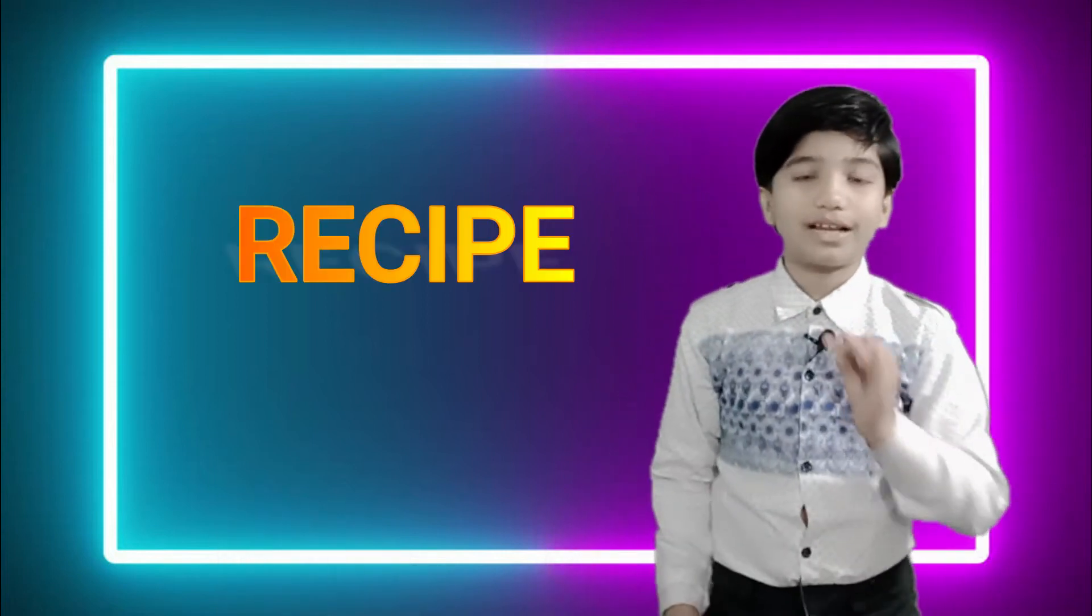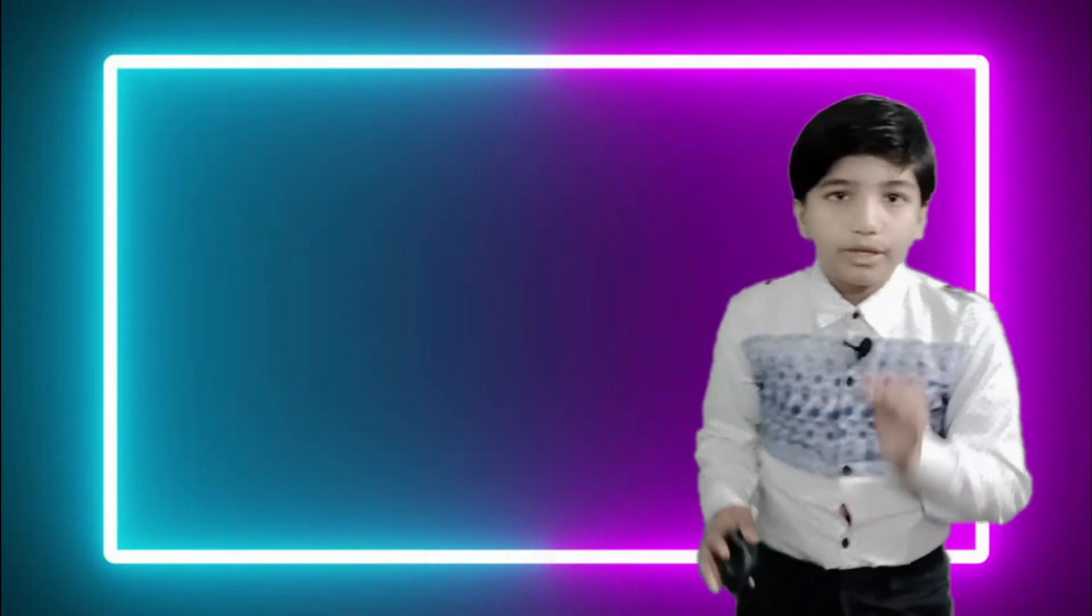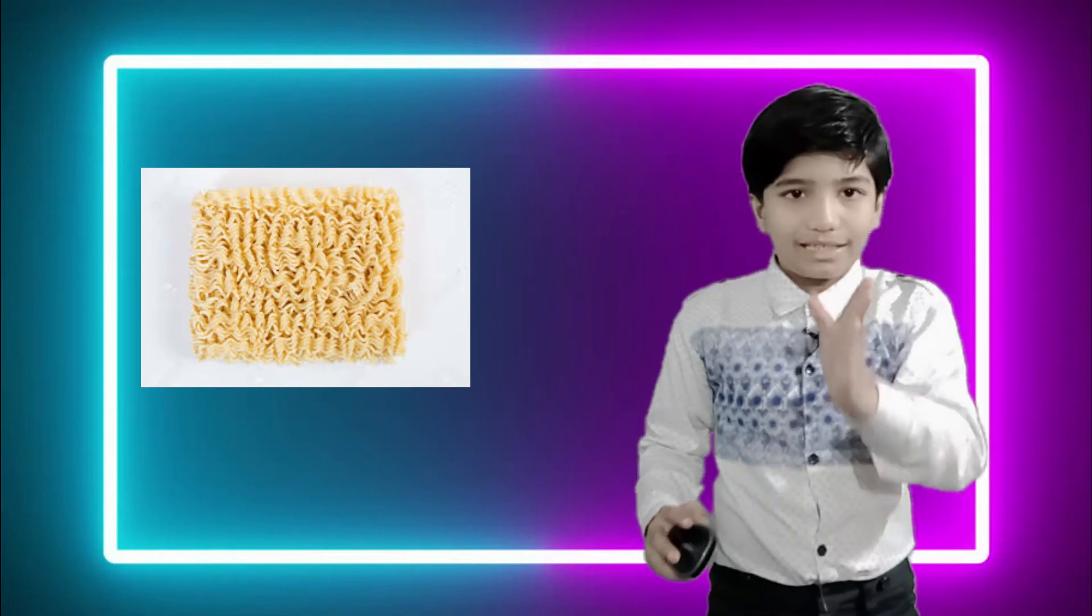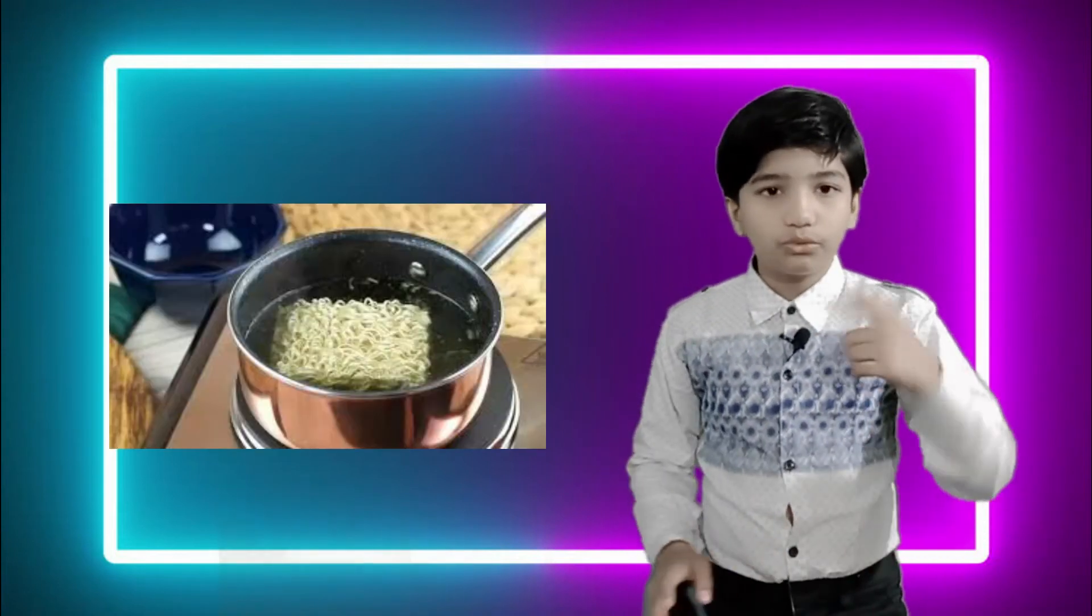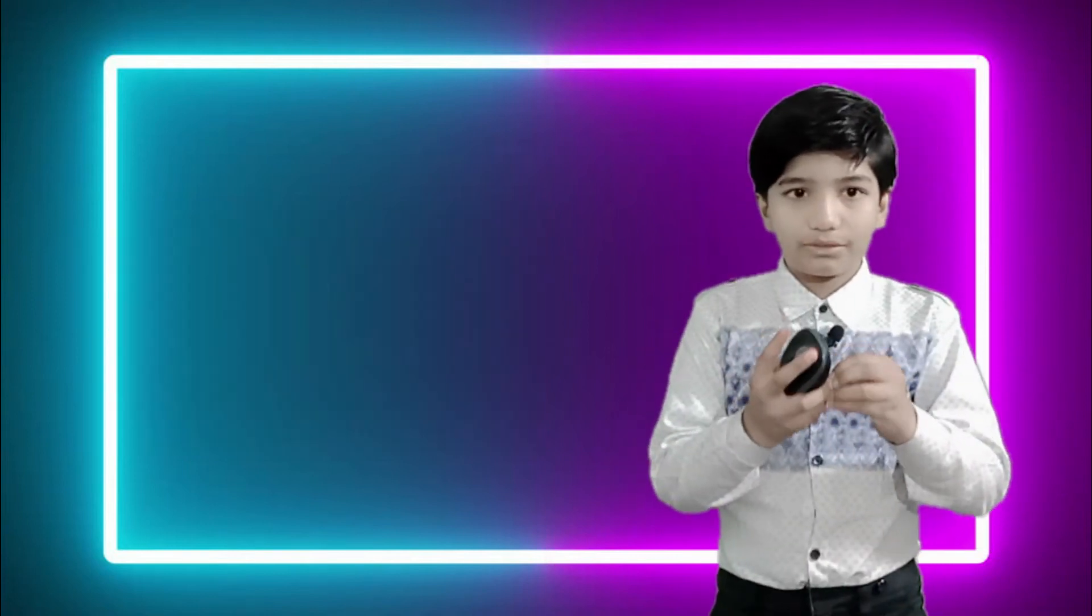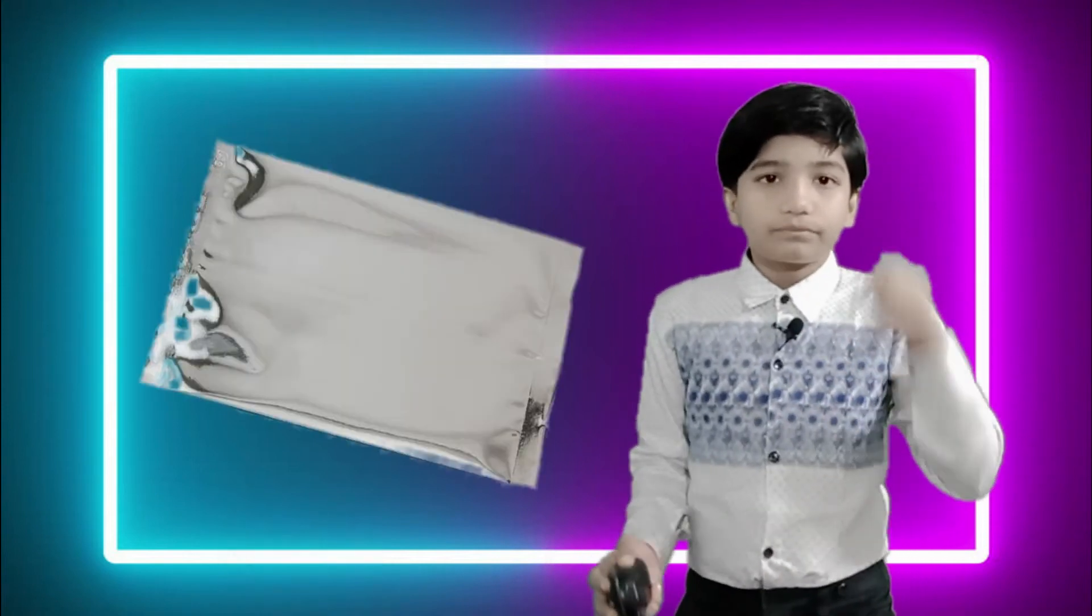Now we will start the recipe. We have a bag of Good Dot noodles in this pack. We divide it into four equal portions. Then we have the noodles. This is the place to use the sauce. This is the mixture of the sauce.